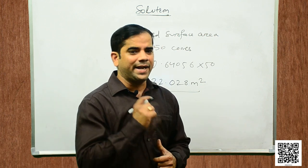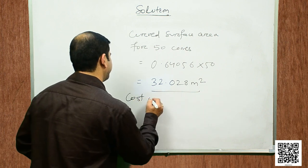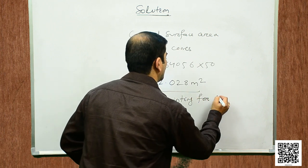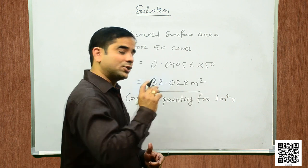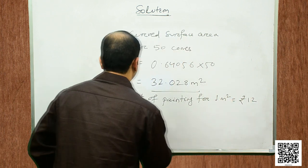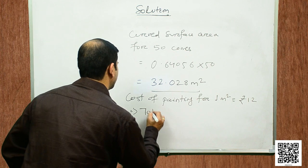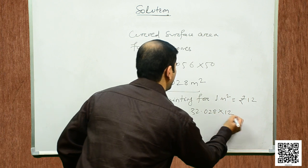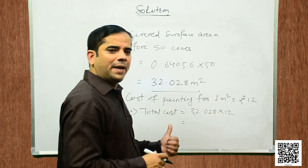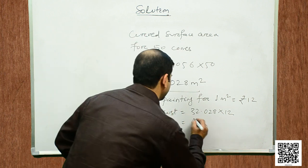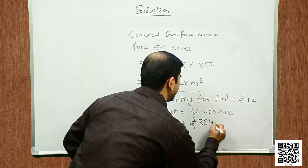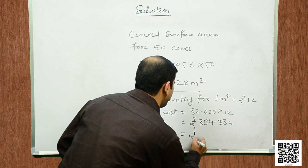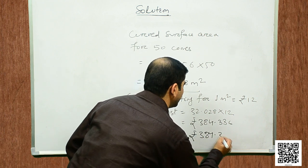Now let us find the cost of painting. Cost of painting for 1 square meter is rupees 12. Total cost = 32.028 × 12 = rupees 384.336, or rounded off, approximately rupees 384.30.